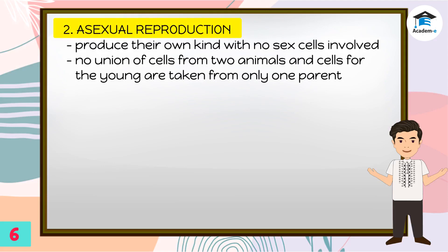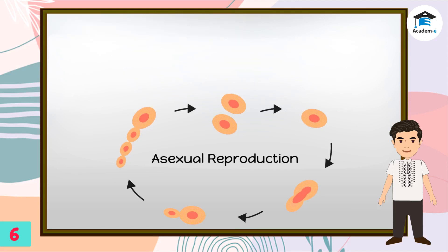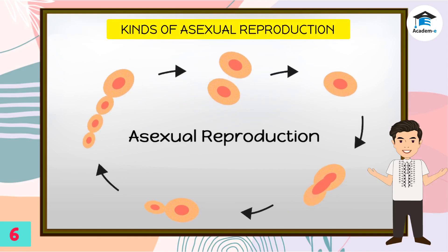The second type of reproduction is called asexual reproduction. Animals that produce their own kind with no sex cells undergo asexual reproduction. With this type of reproduction, there is no union of cells from two animals, and cells for the young are taken from only one parent. The different kinds of asexual reproduction are budding, cell division, fragmentation, and parthenogenesis.